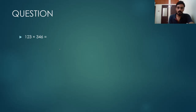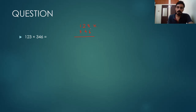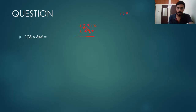We have two 3-digit numbers: 123 and 346. When we do 3-digit multiplication, first we multiply with the ones place digit, then the tens place digit, then the hundreds place digit. So first we will multiply 123 into 6. 3 times 6 is 18 — we write 8 here and carry 1.